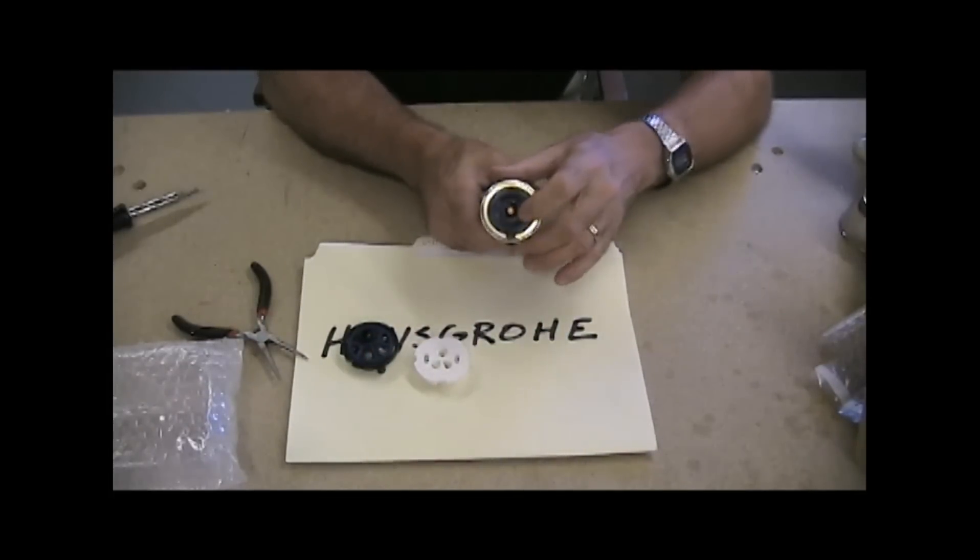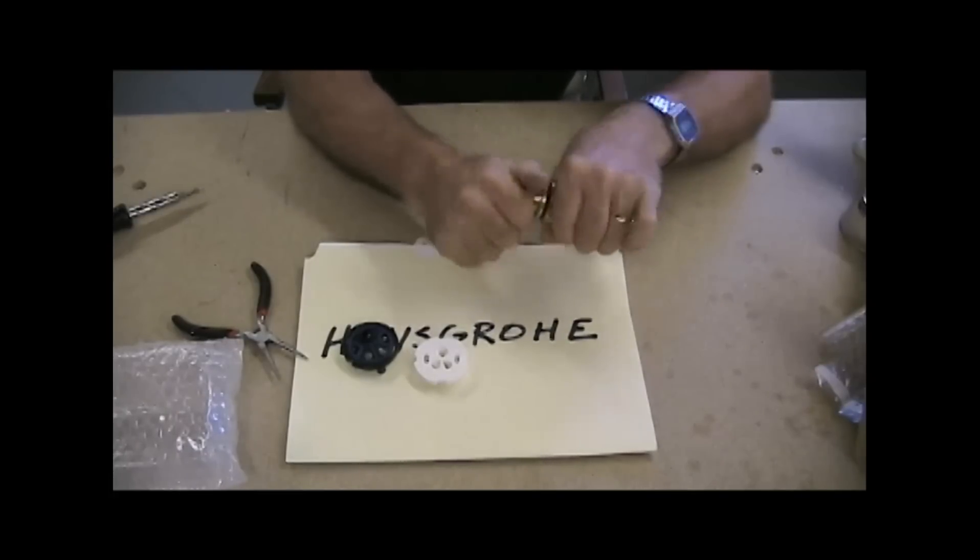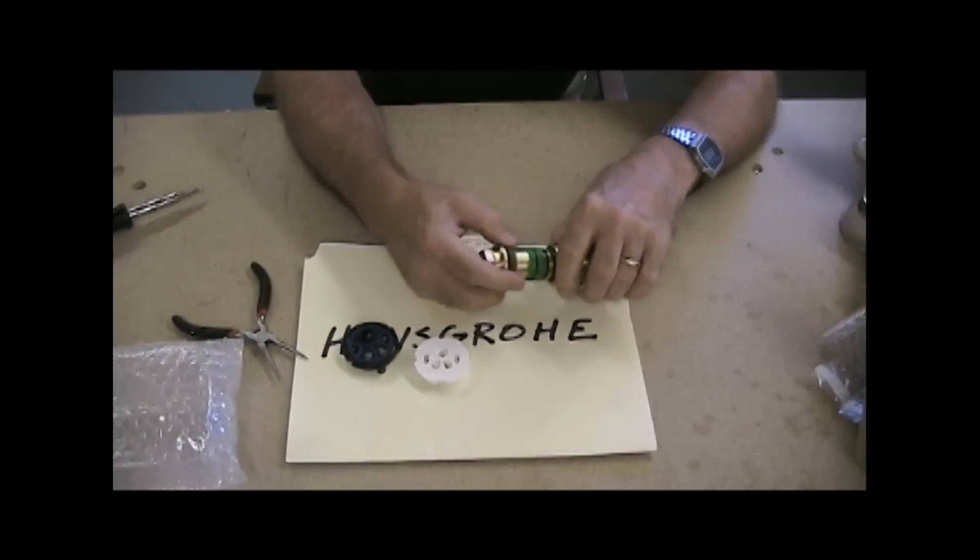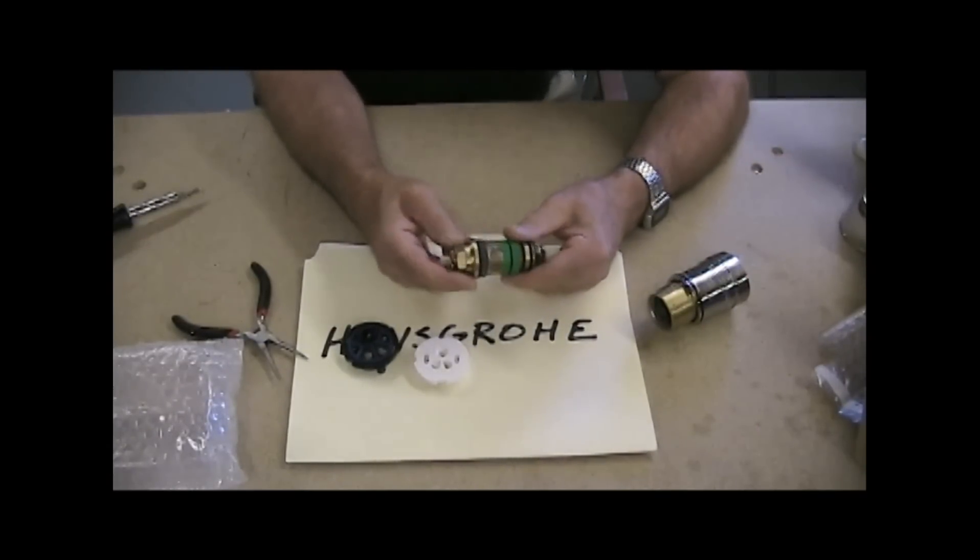If I look in here, there's another little seal in here. Let me see if I can take this out here. There we go. This is not a pressure balanced valve. It is a thermostatically balanced valve. And this is the cartridge that does that.